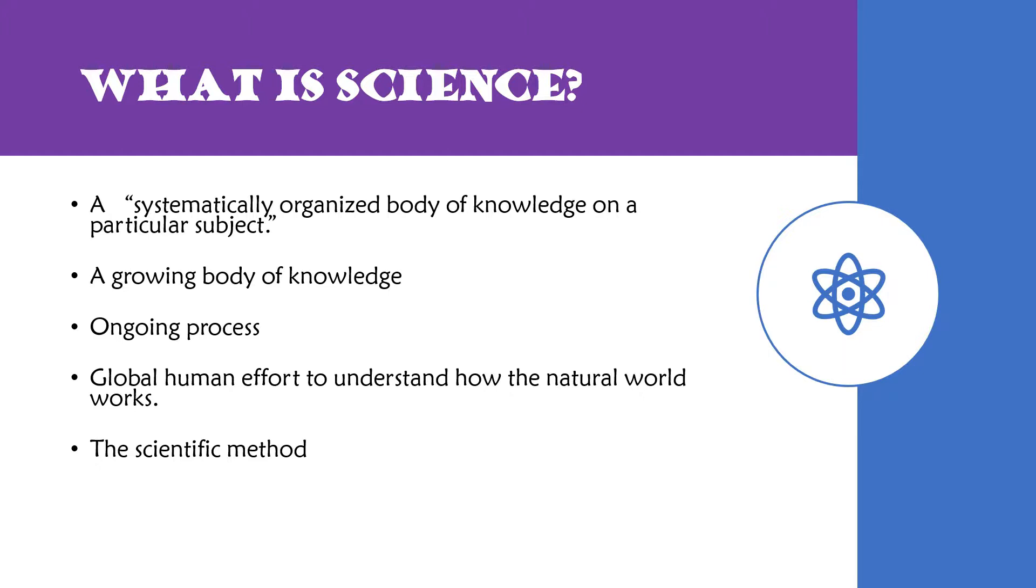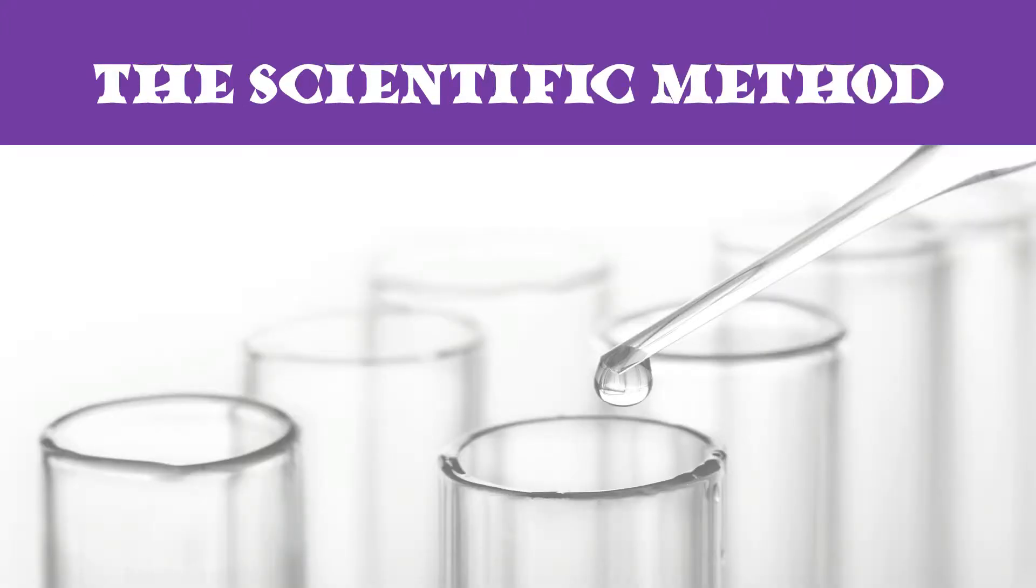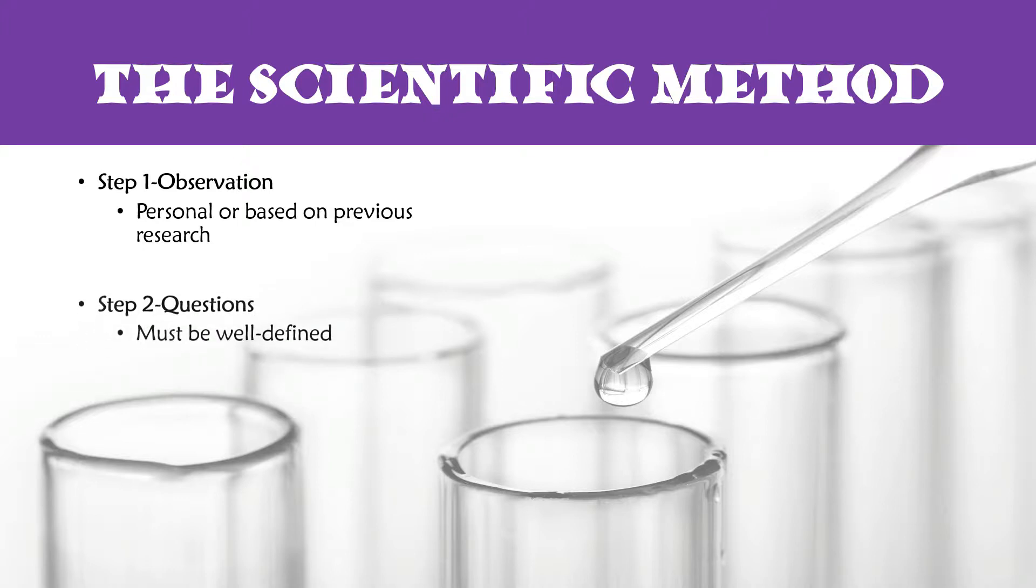Now remember, for something to be considered science, a question must be defined and addressed using the scientific method. Now there are approximately eight steps, give or take a few depending on what you're reading. But step one is always going to be observation. Your observation can be personal or based on previous research. Once you've made your observation, step two is creating your question. This question has to be well defined because if it is not well defined, it's going to be hard creating an experimental design to address your question. So you got to have an idea of what you want to learn, what you want to address, so that you can efficiently determine how you're going to address it.